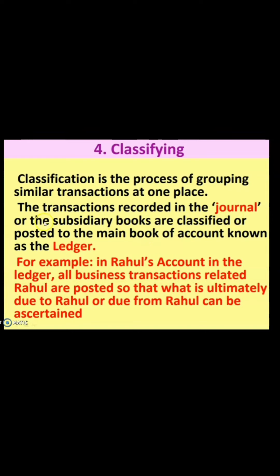Once we have recorded the transactions in the journal — the first entry book — and also in the subsidiary books, we will then classify those transactions by posting the same in the ledger book. For example, in Rahul's account in the ledger, all business transactions related to Rahul are posted, so that what is ultimately due to Rahul or due from Rahul can be ascertained.